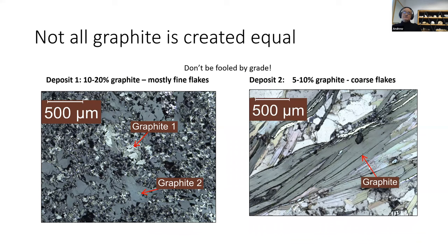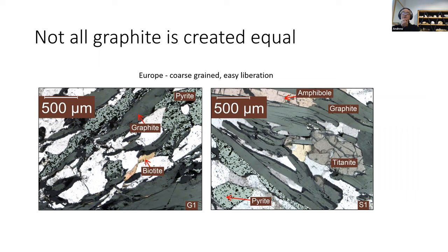Now consider two different deposits. Deposit one on the left has 10 to 20 percent graphite; deposit two on the right has five to ten percent. But look at the difference — those scales are the same, 500 microns each. The graphite on the left has tiny little flakes with a bimodal population, while on the right there are millimeter-size flakes. Don't be fooled by grade — it's really very important. We've often found that the higher-grade graphite deposits don't have the biggest flakes.